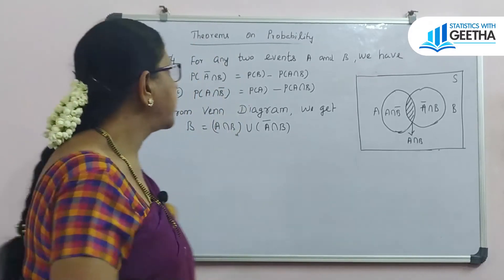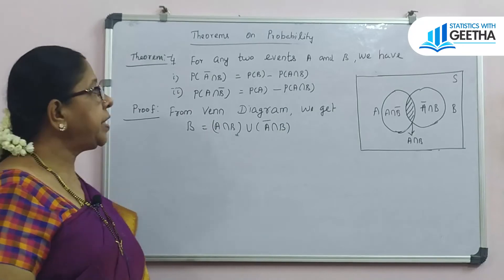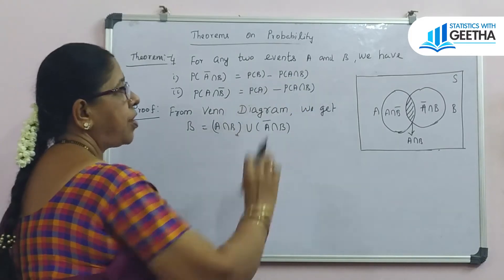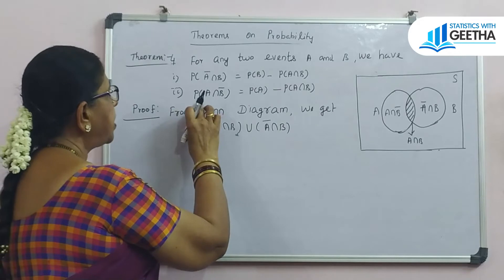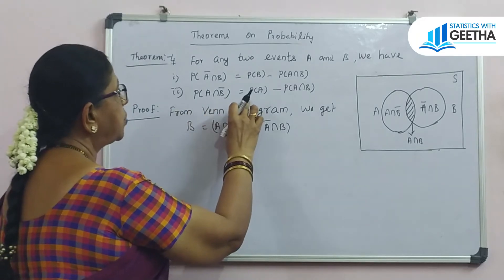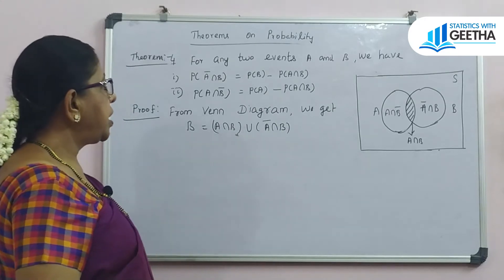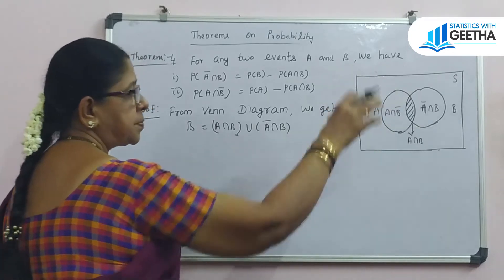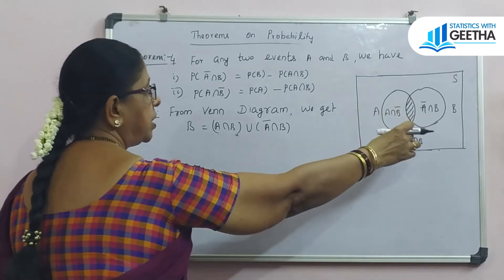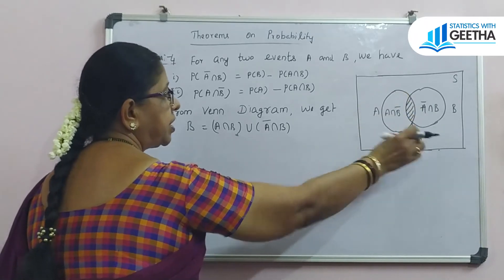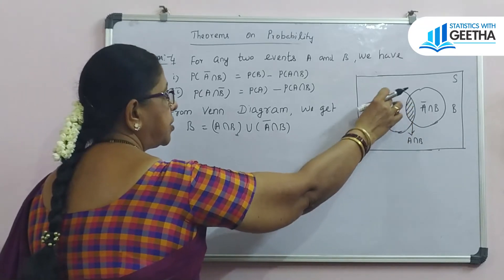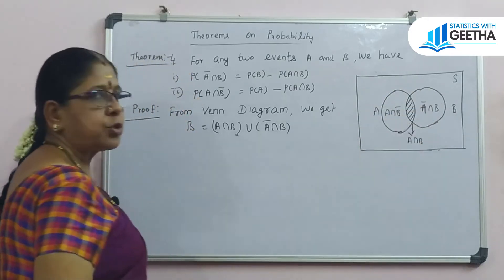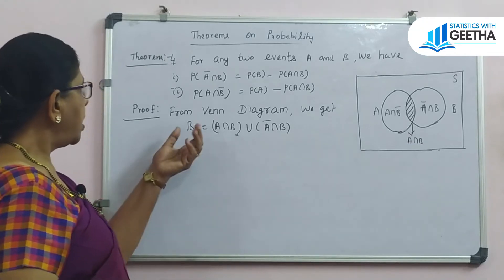We also have two further results: first, P(A' ∩ B) equals P(B) minus P(A ∩ B); second, P(A ∩ B') equals P(A) minus P(A ∩ B). In this proof we will use the Venn diagram. In the diagram, the sample space contains events A and B, where the shaded portion is A ∩ B, another region is A ∩ B complement, and another is A complement ∩ B.